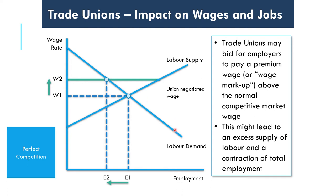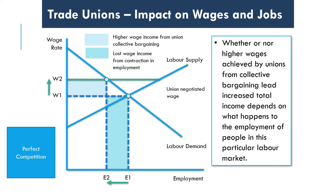At this higher wage, firms will only want to demand E2 workers, yet a greater number of workers would actually be willing to work at this wage rate. This creates less total employment and a lot of excess supply of labour. We get some higher wages for some workers, but also lost wage income from the contraction in employment. Whether higher wages achieved through collective bargaining increase total income depends on what happens to employment in this labour market.